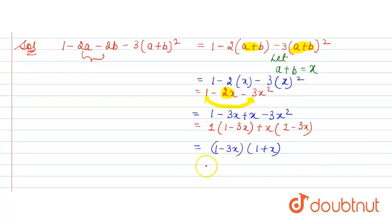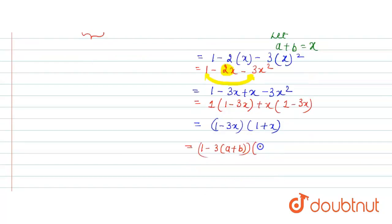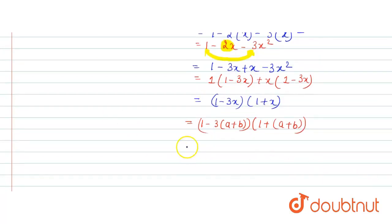Now, substitute the value of x here. That is 1 minus 3 times a plus b into 1 plus a plus b, and this is our answer. Thank you.